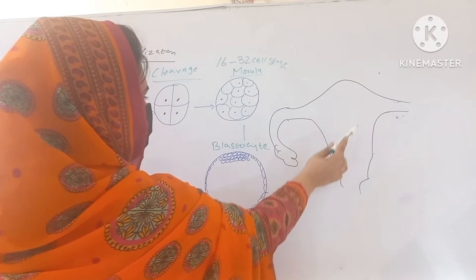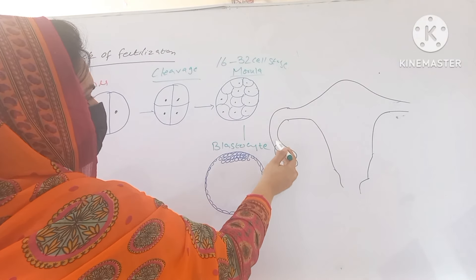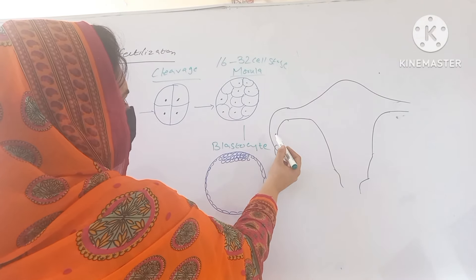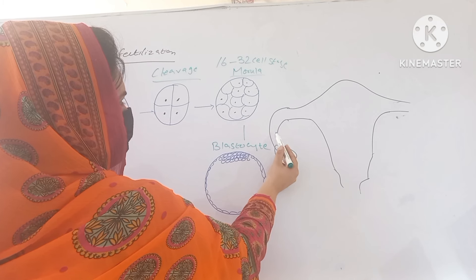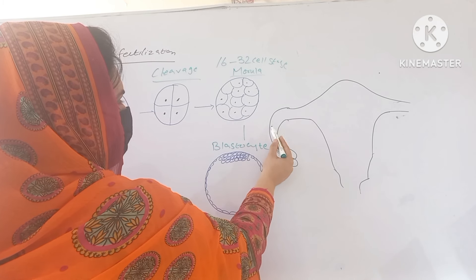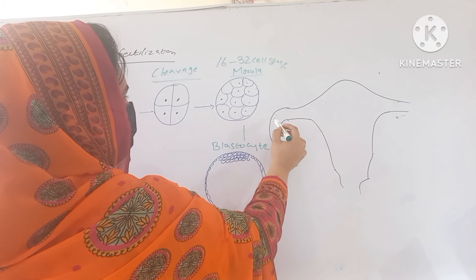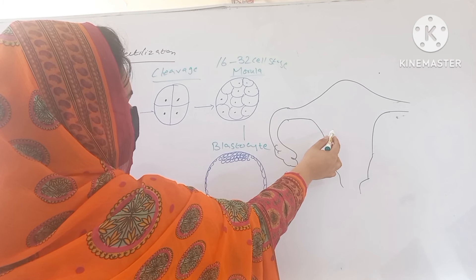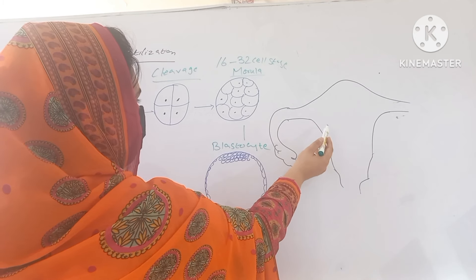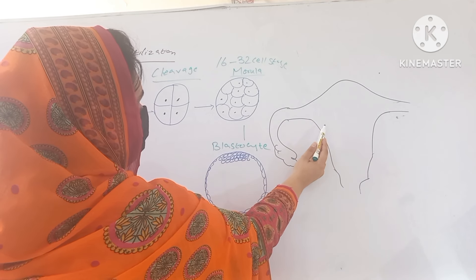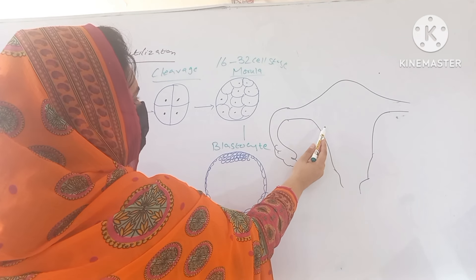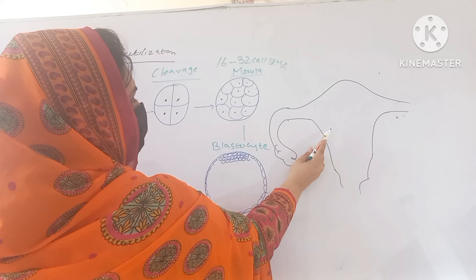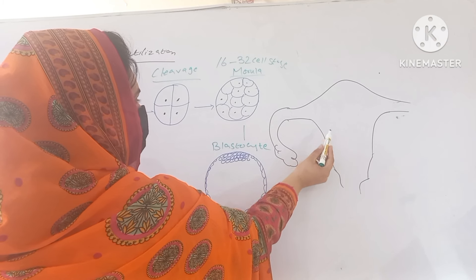This is the structure of the uterus — this is the fundus, the body, and this one is the uterine tube. After fertilization, which occurs in the ampulla of the uterine tube, the morula will enter into the uterine cavity almost at the 3rd to 4th day after fertilization.